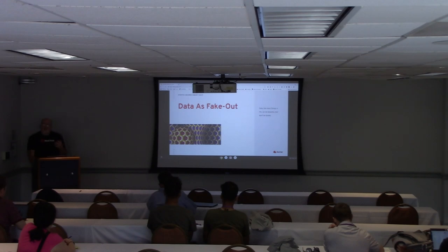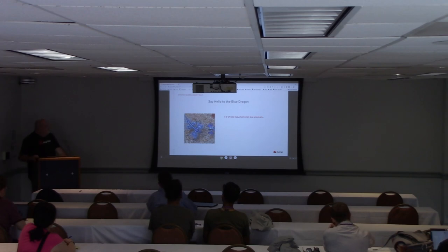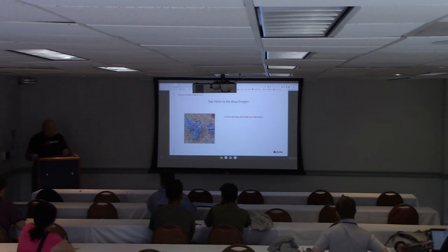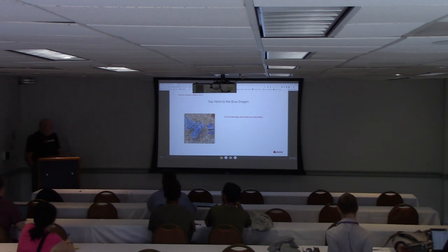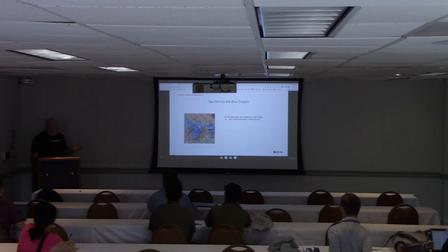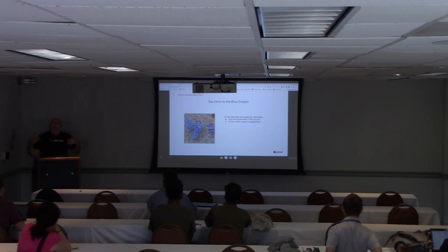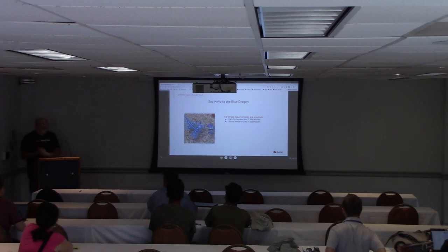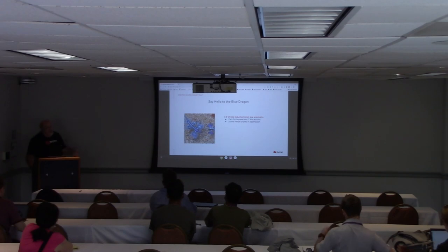To give you an example in nature of things that might look really pretty but would also throw you off, let me introduce you to the blue dragon. This is a wonderful looking creature — a three centimeter long sea slug, also known as a sea angel. Right away it's giving you a pretty good vibe. Except for the fact that it eats Portuguese man-of-war jellyfish. It keeps the venom from the jellyfish inside its own body. So if you touch this thing, welcome to neural paralysis. It won't kill a human, but it won't really feel well. Beautiful, but harmful.